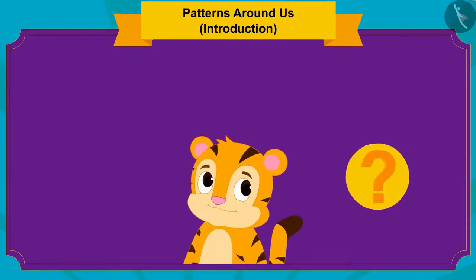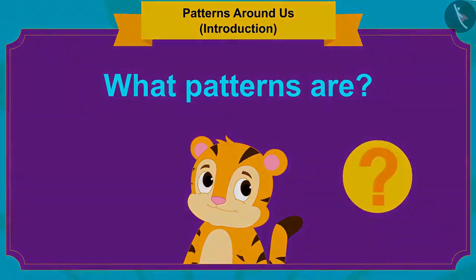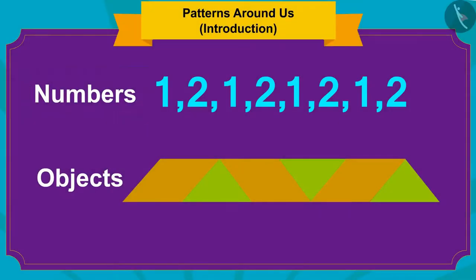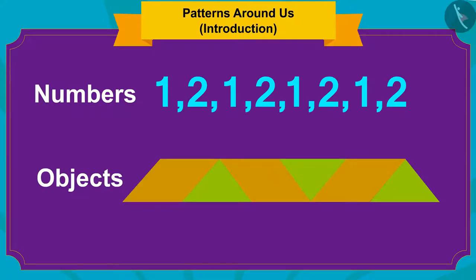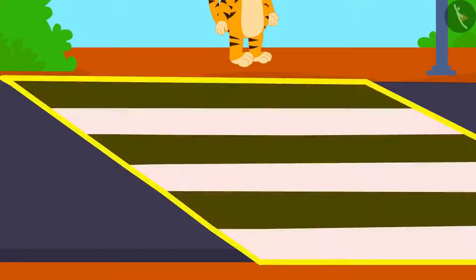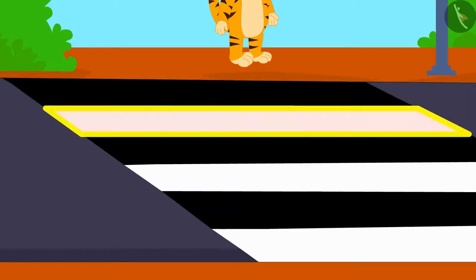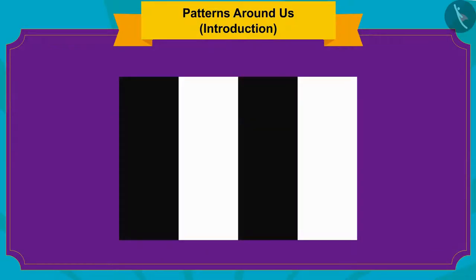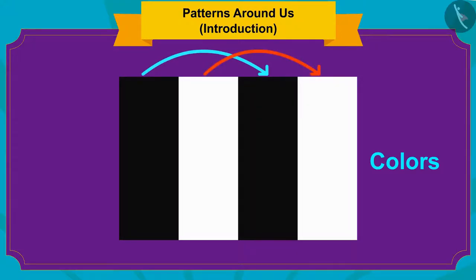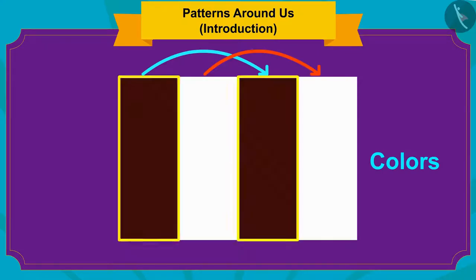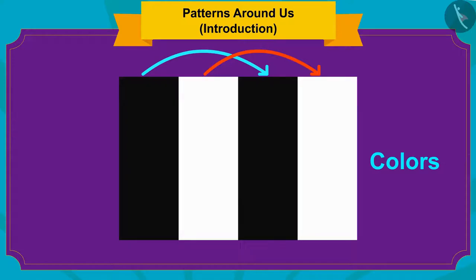Children, do you know what patterns are? A pattern is a group of numbers or objects arranged in such a way that all objects are related to each other by some rule. For example, here there is one black band at the zebra crossing and then a white band, and these are repeating to form the colors of the strips. This is an example of a pattern in which colors are being repeated according to a rule.